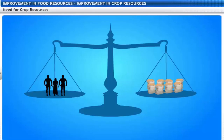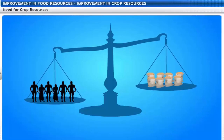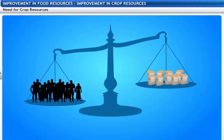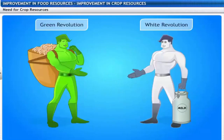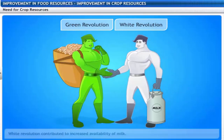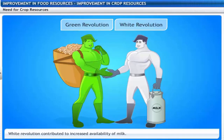The population of India is more than 1 billion and is increasing, therefore there is an increasing need to feed this growing population. Recent efforts to increase food production have proved successful. The green revolution contributed to increased food grain production and the white revolution contributed to increased availability of milk.